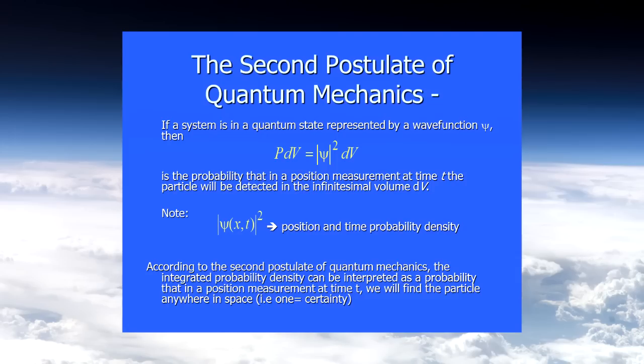The second postulate is the interpretation of the wave function: the square of the wave function is a probability of being in a given state. This is the Copenhagen interpretation, named after Niels Bohr who came from Copenhagen. Suddenly things go from completely abstract to something you can relate to — probabilities you can measure by repeating experiments on identical systems and counting results.